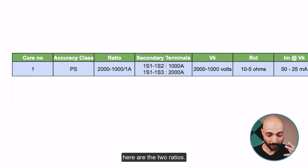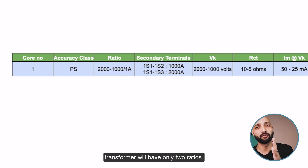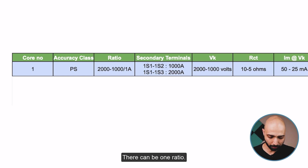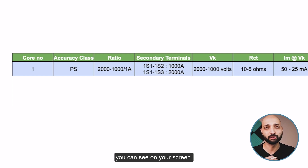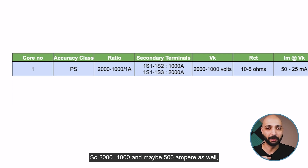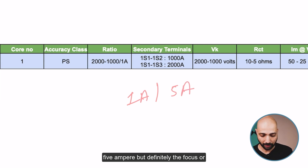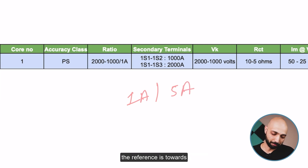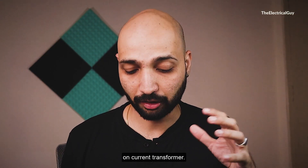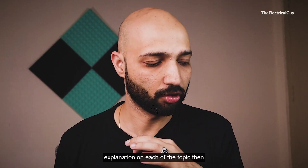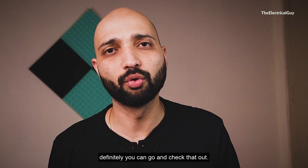The current transformer does not necessarily have only two ratios. There can be one ratio, such as just 1000 ampere, or two ratios as shown, or three ratios — for example 2000, 1000, and 500 ampere. The secondary current after the slash can be 1 ampere or 5 ampere. If you are looking for a detailed explanation on each topic, there is a dedicated playlist on current transformers available in the description.